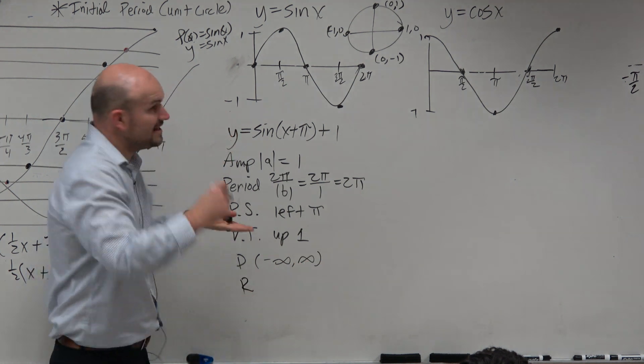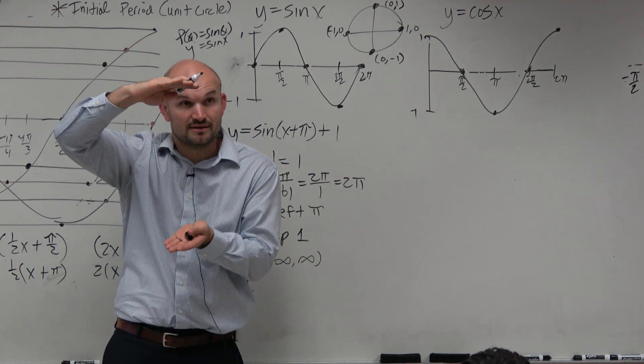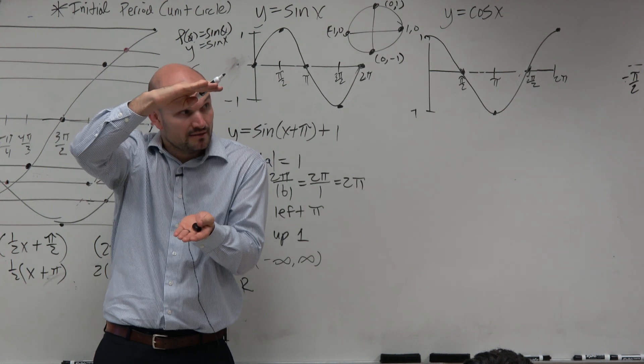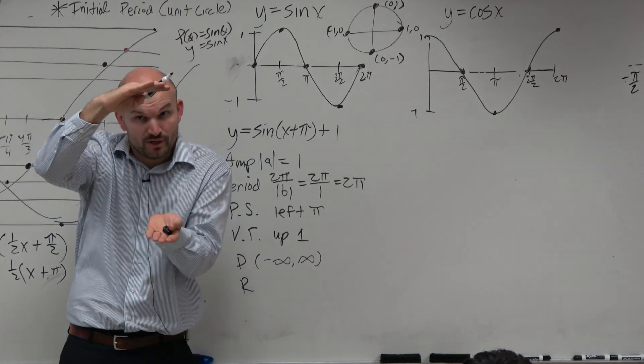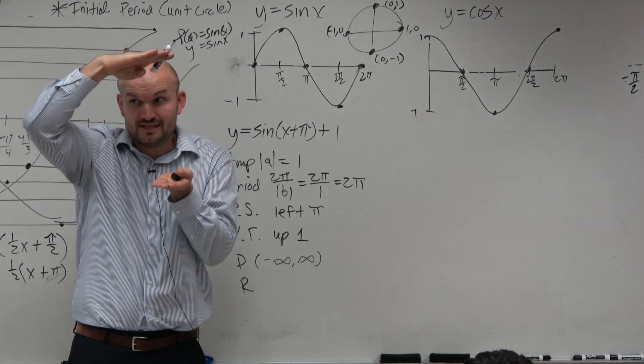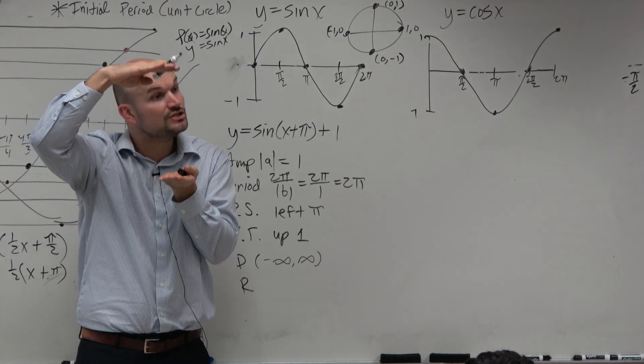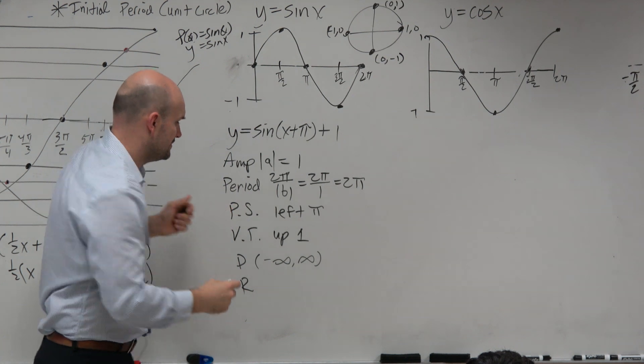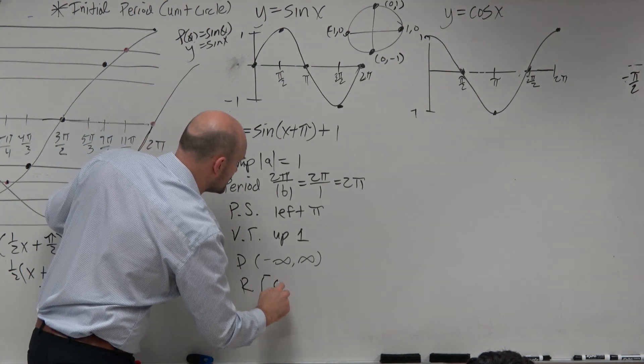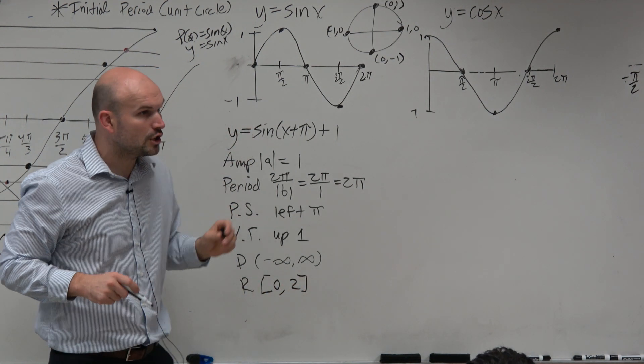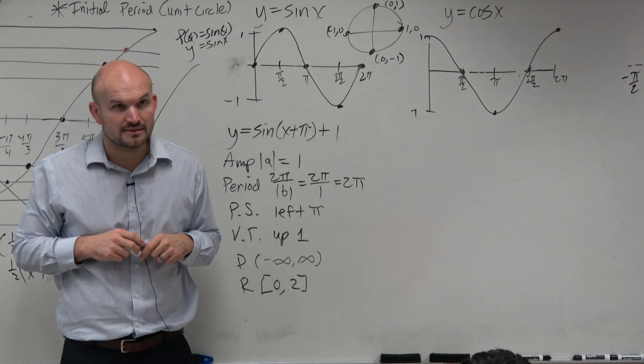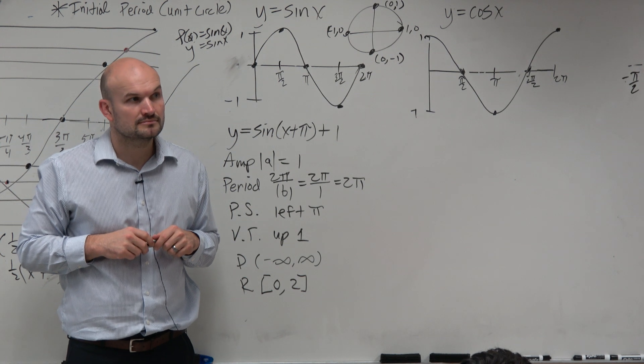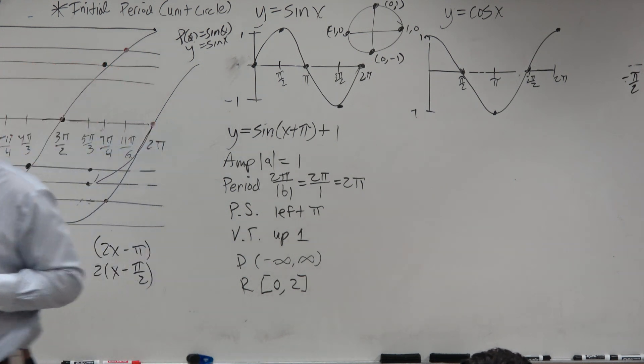What about the range? Now again, the graph was never stretched or compressed, was it? It's from negative 1 to 1. But the graph got shifted up 1. So if it's from negative 1 to 1, and it gets shifted up 1 unit, it's now 0 to 2. We're going from the bottom to the top. And then make sure those are included points. 0 and 2 are y-coordinates of the graph. So that's why we're going to use the brackets, not the parentheses.